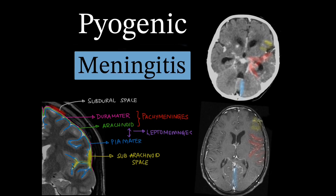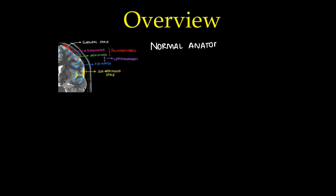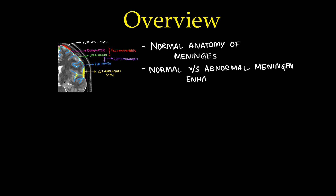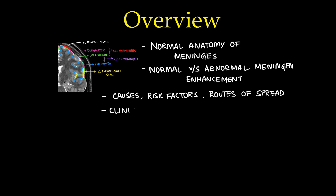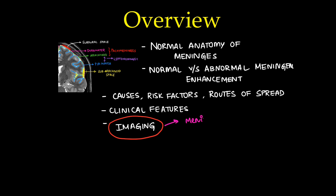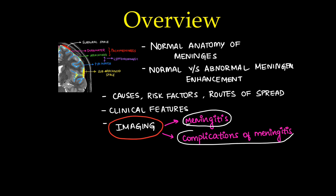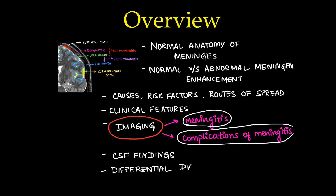In this video, we will learn about imaging in pyogenic meningitis and its differential diagnosis. We will discuss this topic under these headings: first, normal anatomy of meninges; next, normal versus abnormal leptomeningeal enhancement and pachymeningeal enhancement; then pyogenic meningitis — its causes, risk factors, routes of spread, and clinical features; the main part, imaging; and lastly, CSF findings and differential diagnosis.